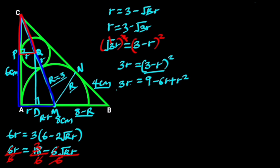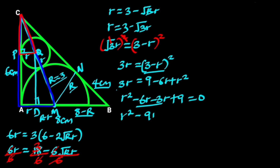Next, we take 3r to the right side, so that r² minus 6r minus 3r plus 9 equals 0. Minus 6r minus 3r is minus 9r. So we have r² minus 9r plus 9 equals 0.